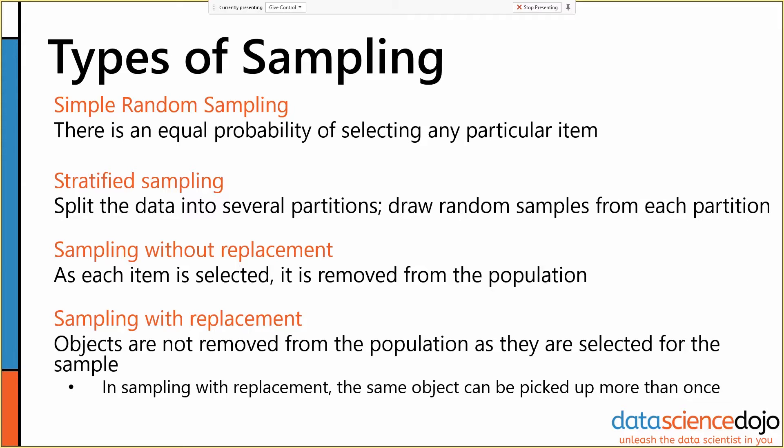So those are our two fundamental ways of actually grouping the data. And then when we're actually sampling, there's two kinds of sampling that come up. There's sampling without replacement, which is what most people think of when they're thinking of sampling.